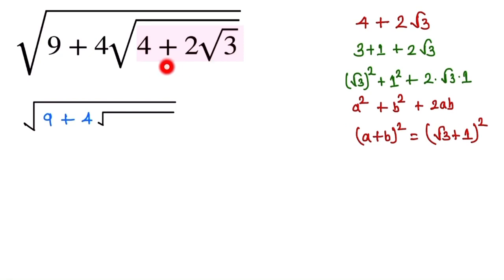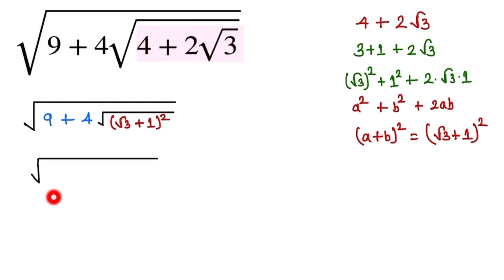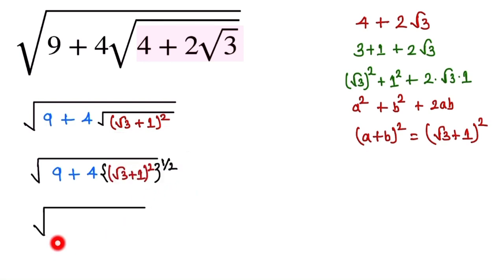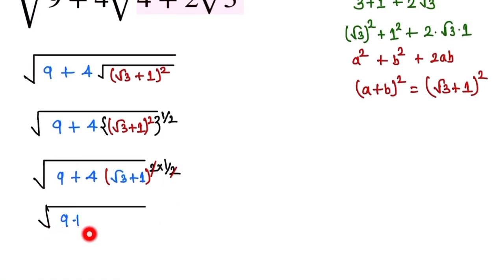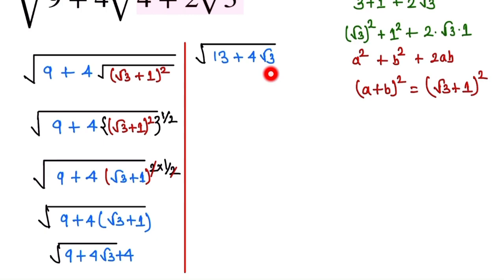Substituting back, we now simplify 9 + 4·(√3 + 1)². Taking the square root of (√3 + 1)² gives (√3 + 1), so we compute 9 + 4(√3 + 1) = 9 + 4√3 + 4 = 13 + 4√3. Now we focus on this new expression.